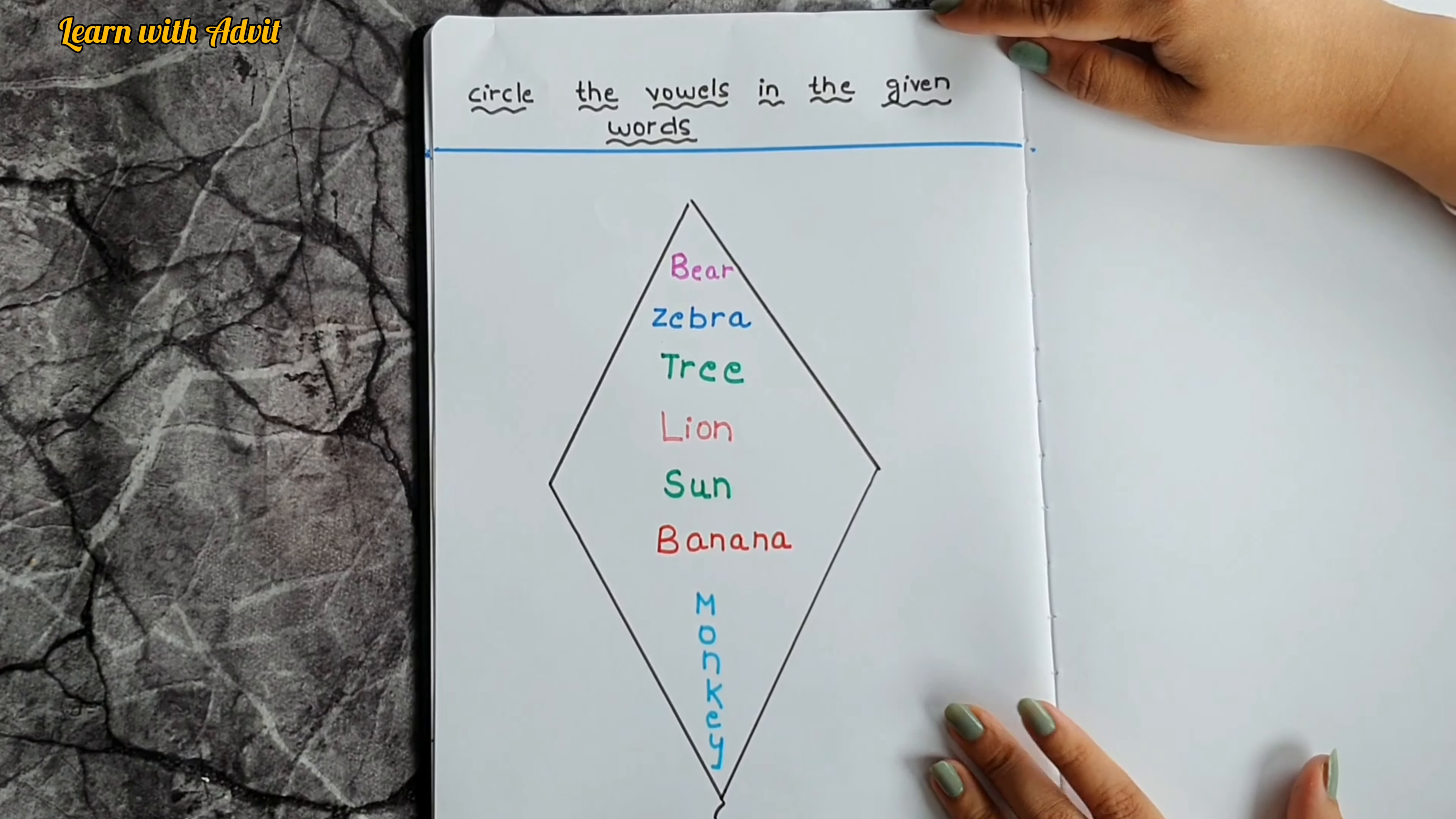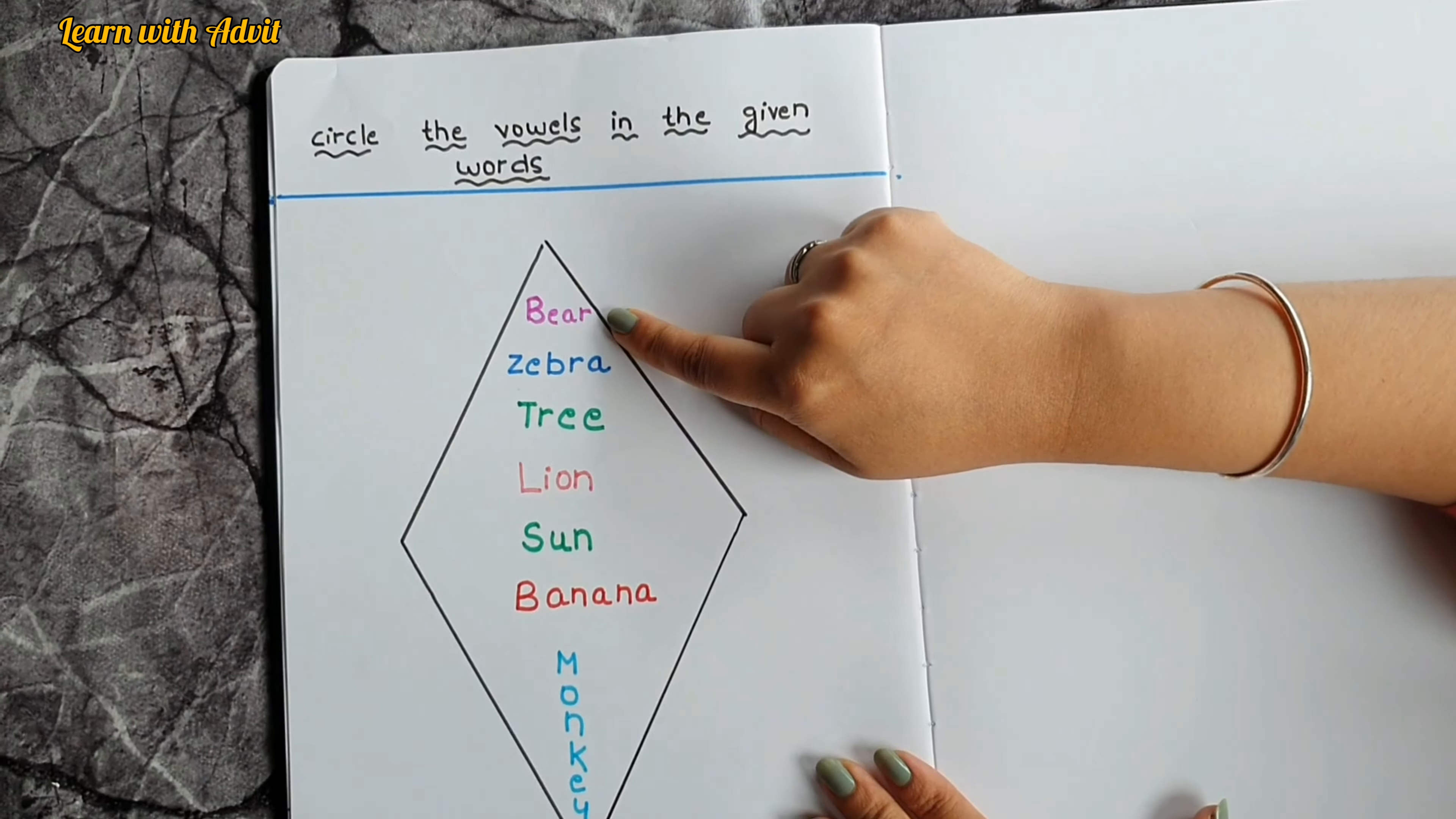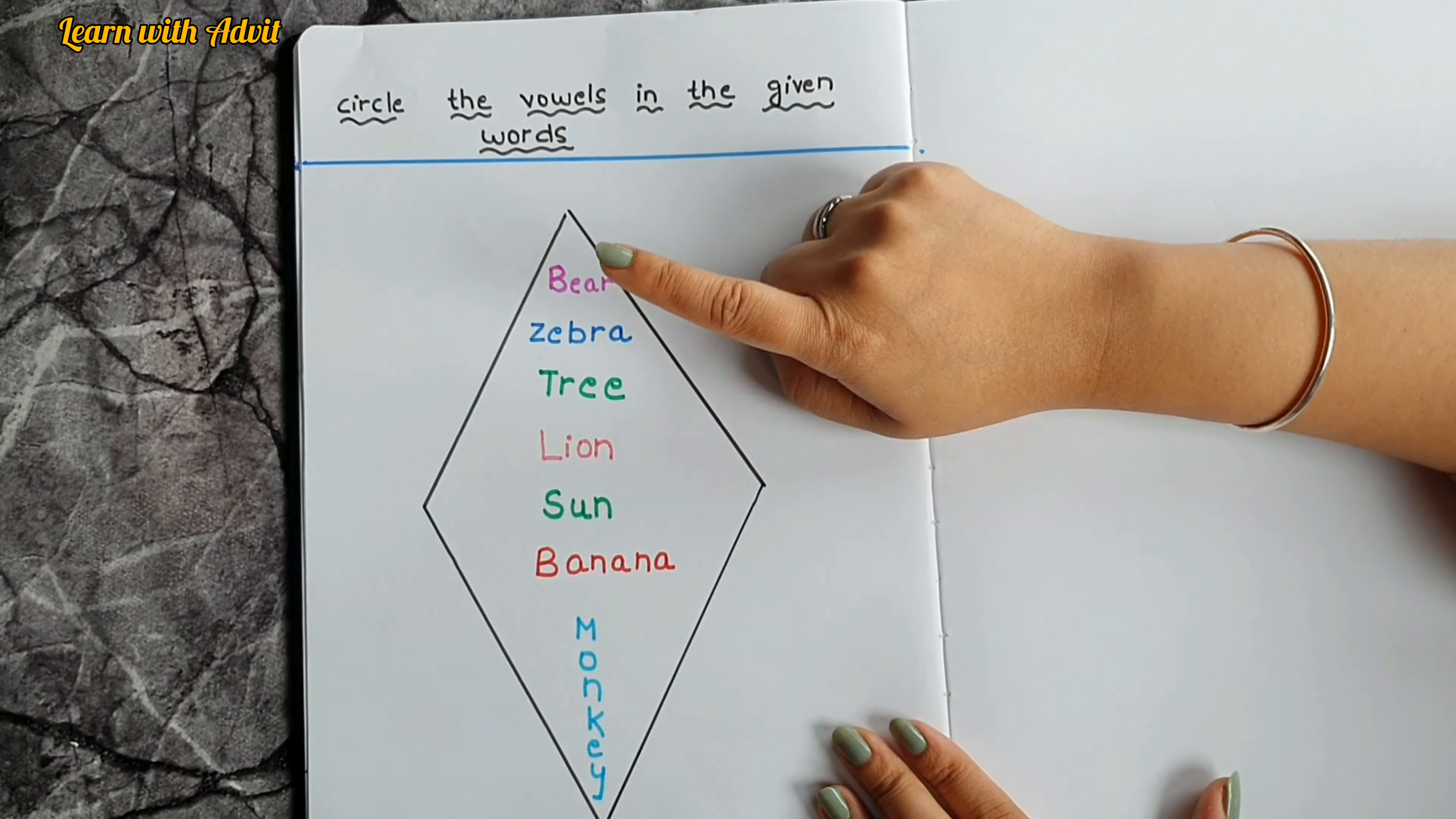In this sheet what do you have to do? Circle the vowels in the given words, okay. So can you tell me what are the vowels? Tell me the word. Bear, so circle the vowels 'e' and 'a', yeah, very good. Zebra. Tree, yeah you have to tell the vowel. Lion, 'i' and 'o', yeah. And sun, 'u'.